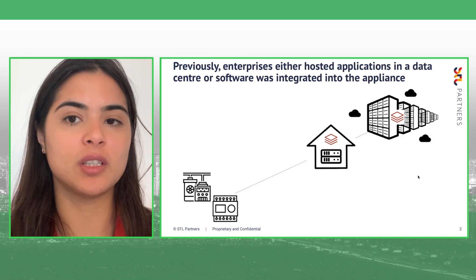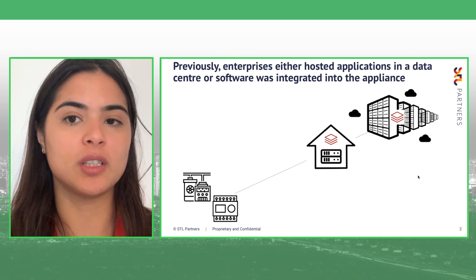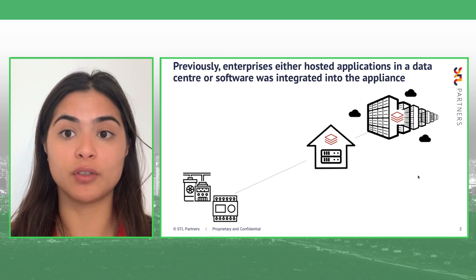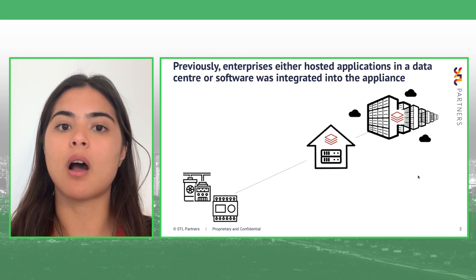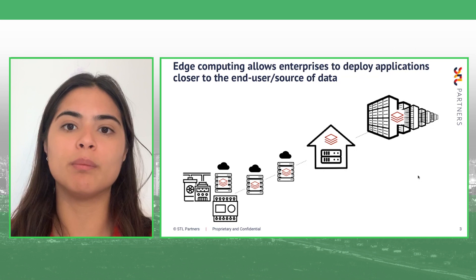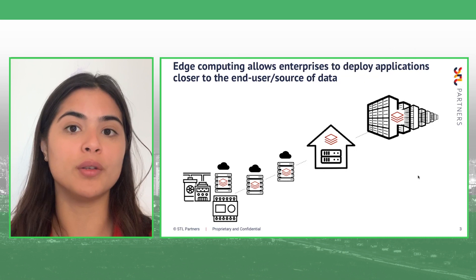When we talk about edge computing, it's always important to do a quick definition of what we mean. From an enterprise perspective, it's really about changing the way IT infrastructure and OT infrastructure works, providing enterprises with more options. Before, as an enterprise or a developer, there were only a few options of where to run, compute, and store data — either on premises in a data centre, in a remote data centre or the cloud, or sometimes data is processed in the end device, which could be in a car, a machine in a factory, a laptop, or a mobile device.